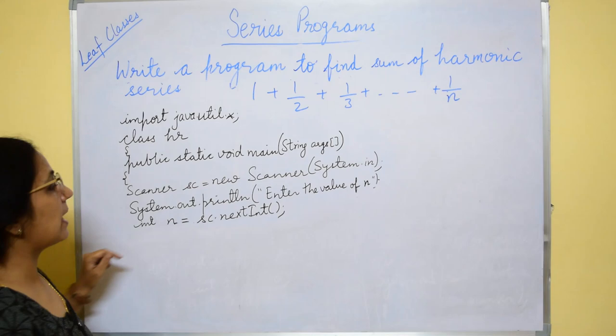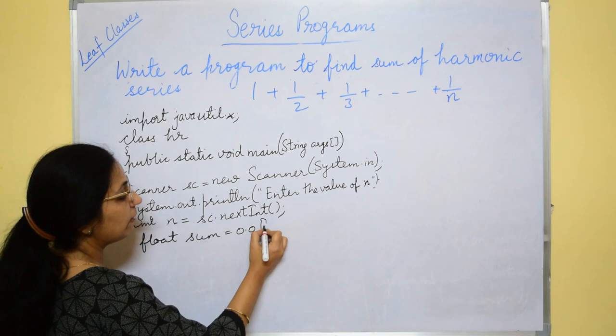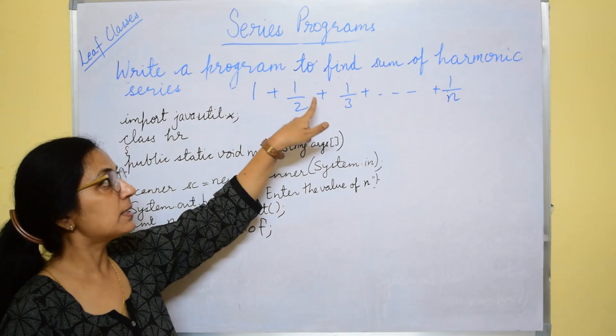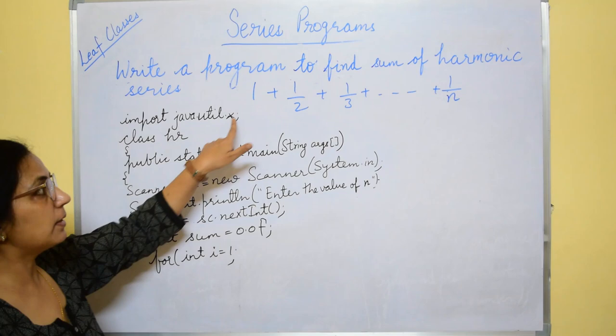We have to find the sum. So here we will take float sum equals to 0.0 f. This f can be written in capital or in small because 1 by 2, 1 by 3 will not give you the answer in integer. So to find the sum we will take the float value.